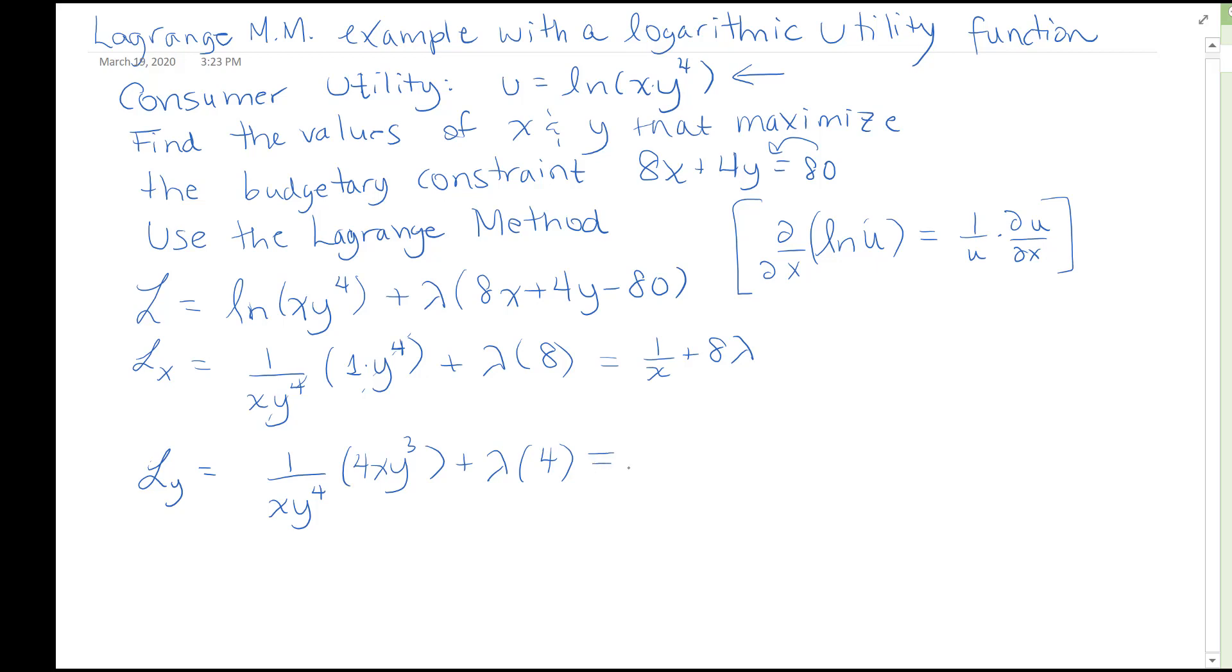And this gives us the following. So we can cancel 3 of the powers of y there if you will, and we're going to cancel the x here and here. We're going to be left with 4 over y in the end plus 4 lambda.